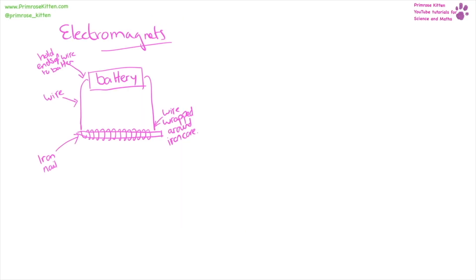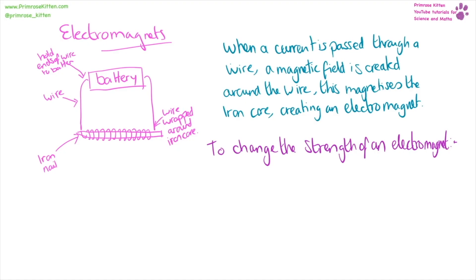You can easily make an electromagnet at home. All you need is a battery, some wire, and an iron nail, because an electromagnet is just an iron core with a wire wrapped around it connected to a current. You can use this to pick up paper clips or iron filings. When a current passes through the wire it creates a magnetic field around the wire, which strongly magnetizes the iron bar, creating the electromagnet. To change the strength, you can change the current or the number of coils wrapped around the iron core.